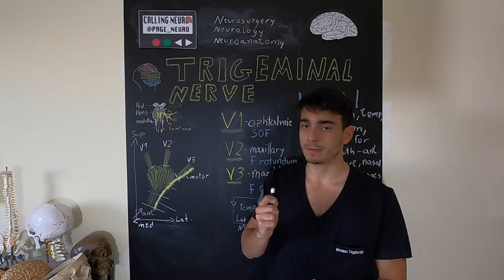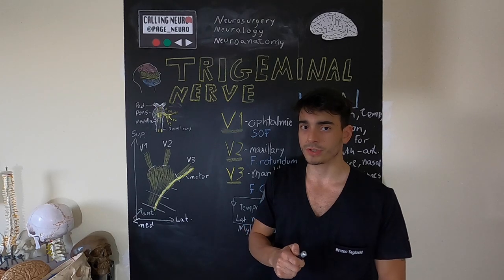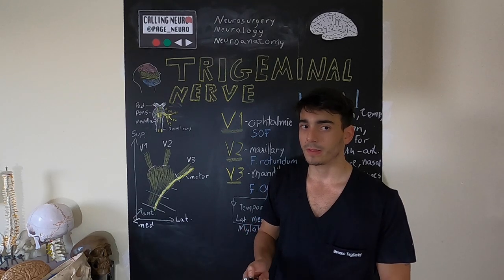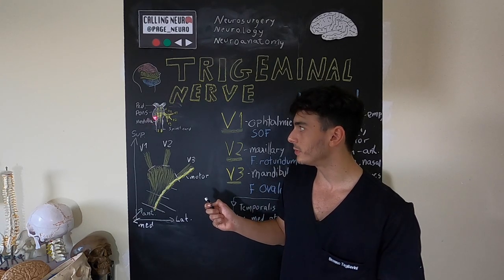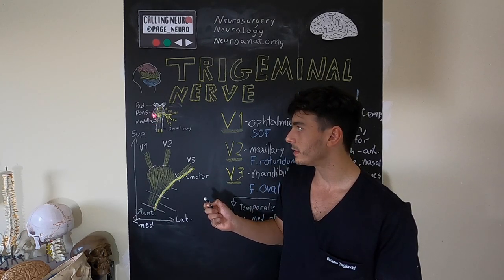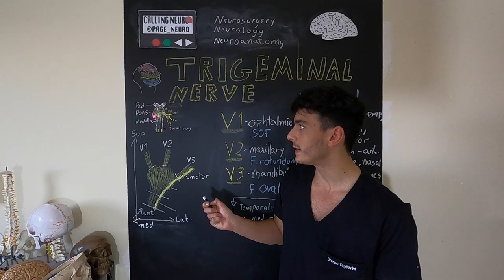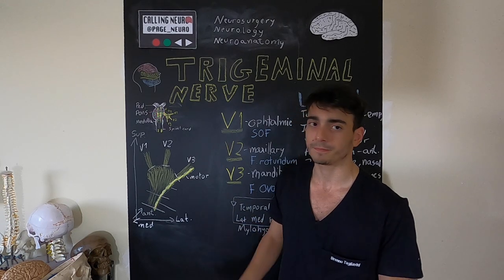The motor division nucleus is found in the mid-pontine tegmentum.